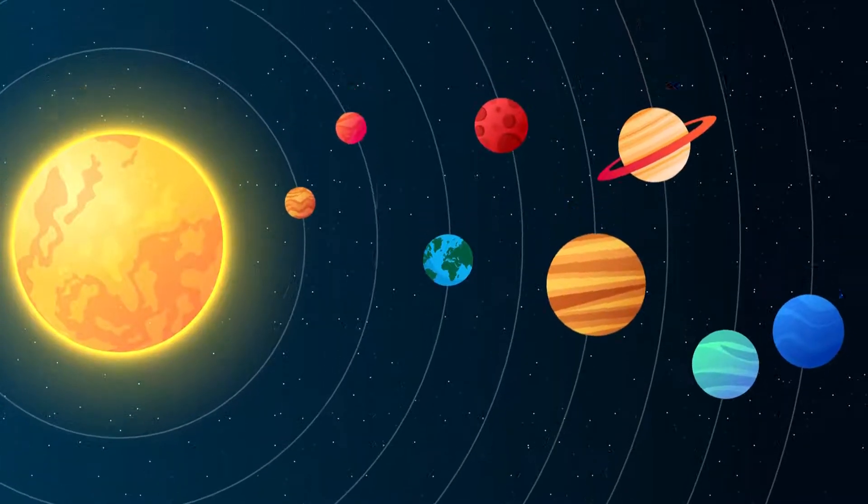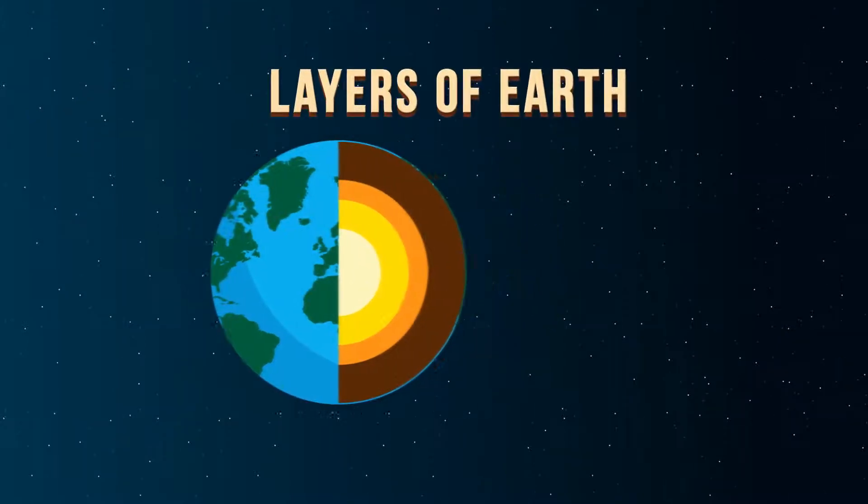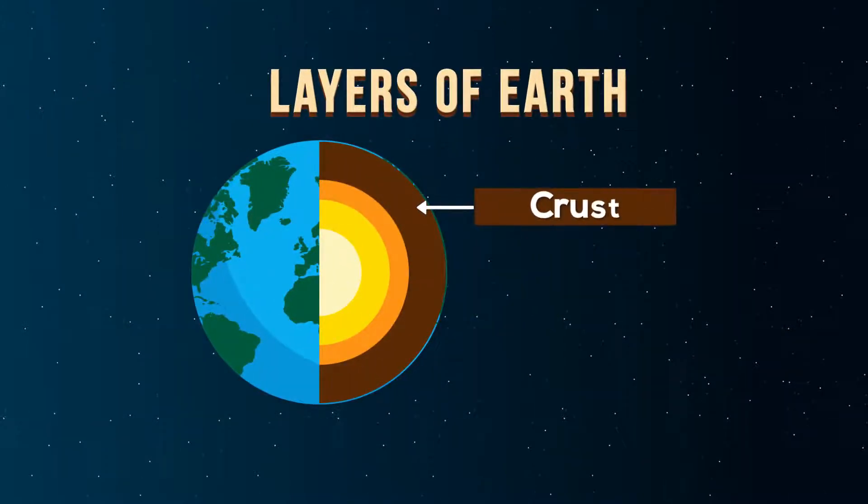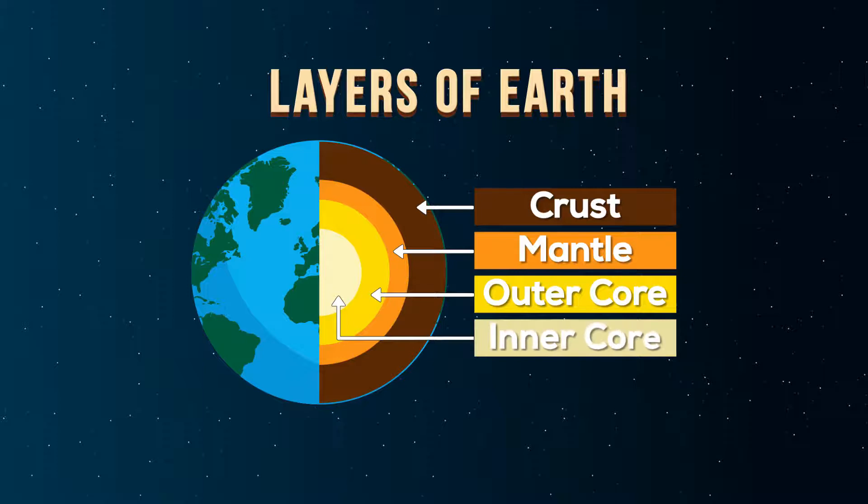To understand the cause of earthquakes, we have to first understand the different layers of Earth. The outermost layer is called the crust. Next is a hot but nearly solid layer called the mantle. This is followed by the liquid outer core, and the innermost layer is the solid inner core.